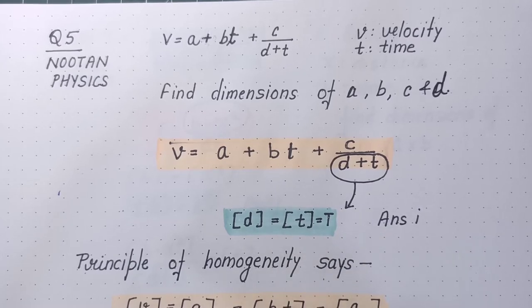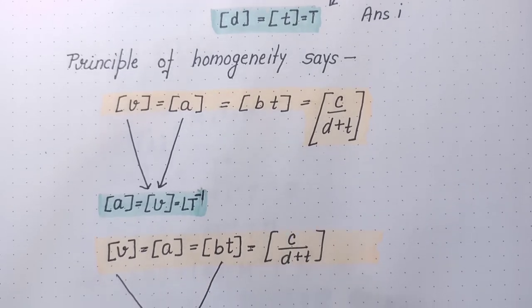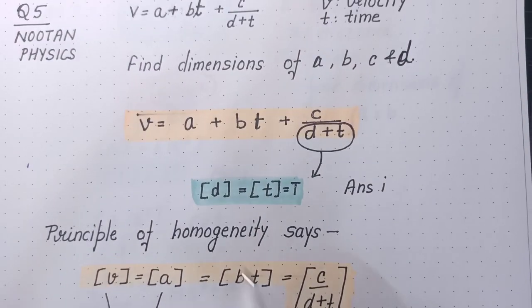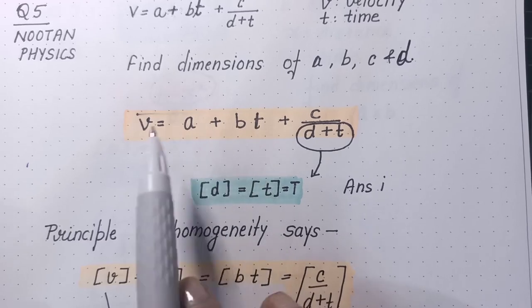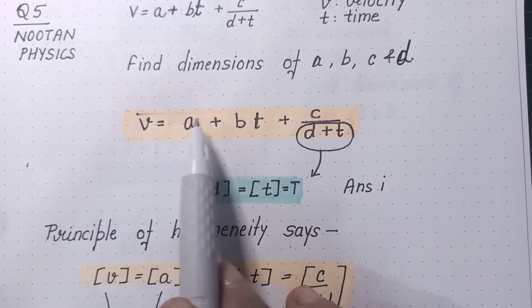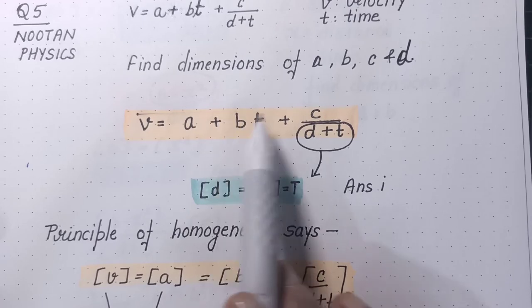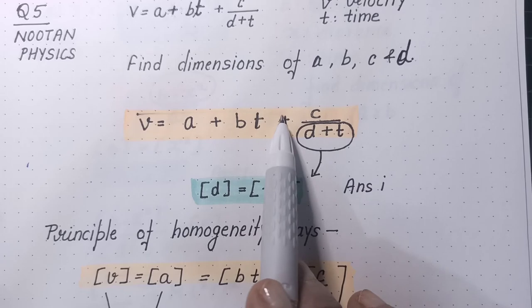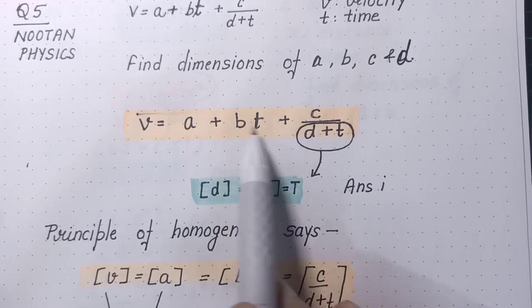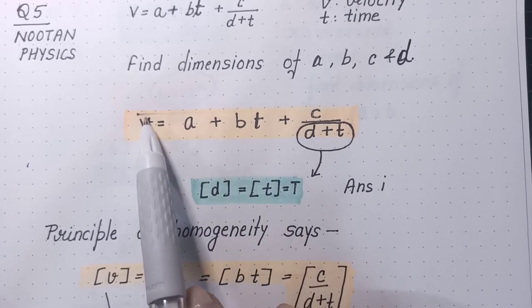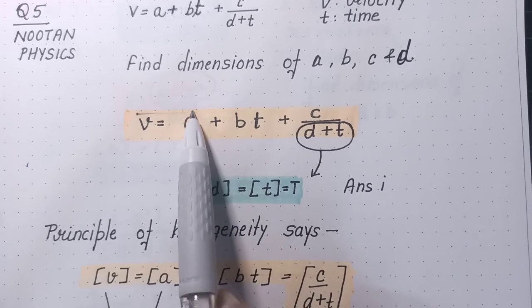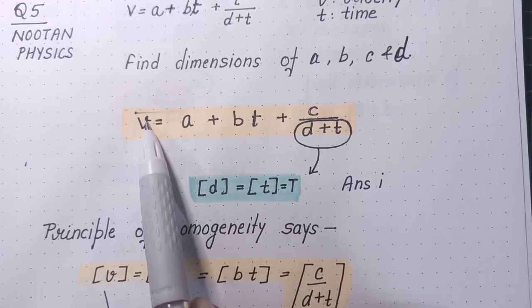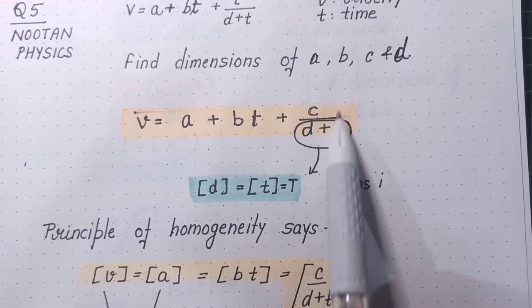So this denominator gives us directly the dimension of D must be same as dimension of time that is T. After that we applied principle of homogeneity that dimension of A should be same as dimension of BT, and dimension of C upon D plus T must be same. When three same dimension quantities add up, the resulting quantity will also have same dimensions. That means dimension of A must be same as dimension of B, dimension of BT must be same as dimension of V, dimension of C upon D plus T must be same as dimension of V.